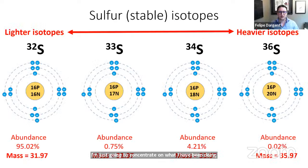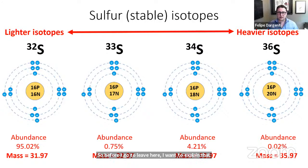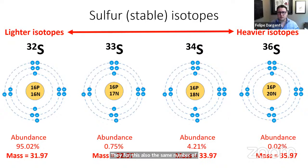Today I'm going to concentrate on what I have been doing on sulfur, which I find really exciting. Before I go too deep, I want to explain that isotopes are alternative forms of the same element — they have the same number of protons and the same atomic number, therefore also the same number of electrons, but they differ in their number of neutrons.